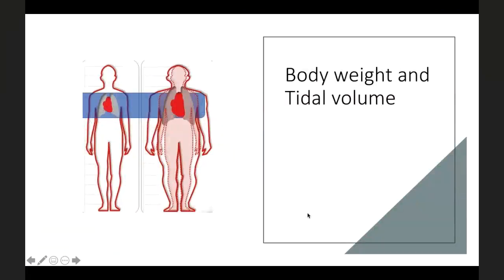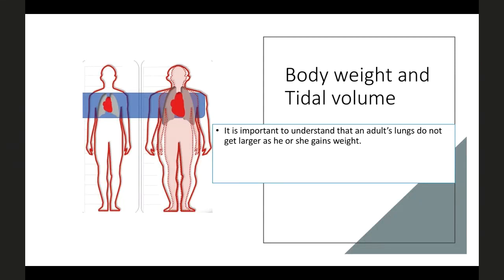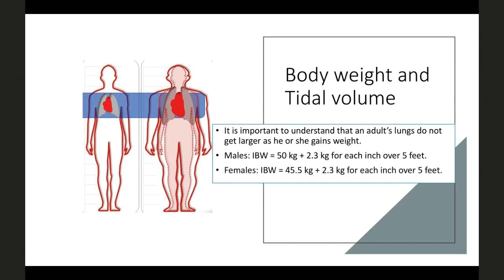Body weight and tidal volume are related through ideal body weight, not actual weight. Two people of the same height may differ in weight, but the lung does not get larger as a person gains weight. For males: ideal body weight = 50 kg + 2.3 kg per inch over 5 feet. For females: 45.5 kg + 2.3 kg per inch over 5 feet. Measure height with a measuring tape in the ICU.